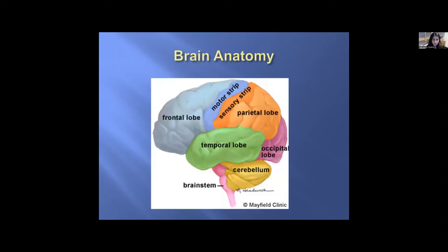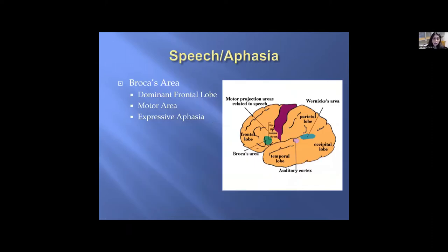Brain anatomy is very important when we determine what symptoms a patient might have from a brain tumor, whether primary or secondary. The different lobes include the frontal lobe, parietal lobe, temporal lobe, and occipital lobe. There are different areas that control motor and sensory function. Speech difficulties or aphasia can develop if there is a tumor in Broca's area, in the dominant frontal lobe, which also controls motor function, affecting a patient's expression of speech.